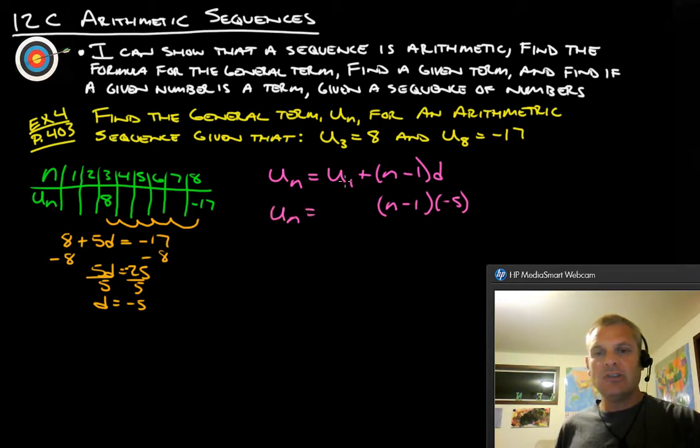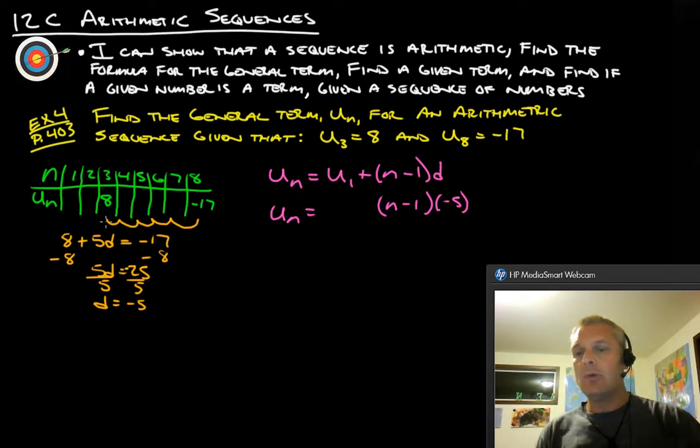For this formula here, we have n minus 1, we leave that in there, and we know that our difference is negative 5. So the only thing we need for our general term formula now is just what the first term is. We have the third term, which is 8, and we also know the difference. So now what we can do is we can actually go backwards from here. We know that we're going to go backwards twice to get to the first term.